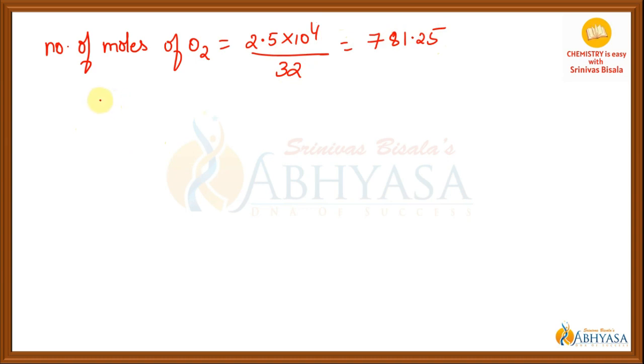Now, as the ratio of nitrogen and oxygen moles is given as 3 is to 1, it means nitrogen moles is 3 times that of oxygen. So therefore, the number of moles of nitrogen becomes equal to 3 into 781.25.